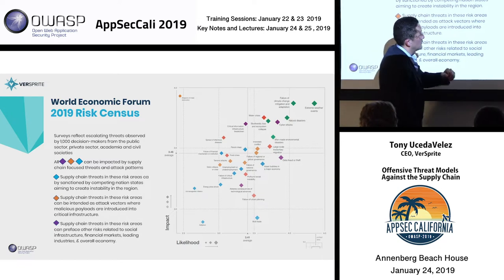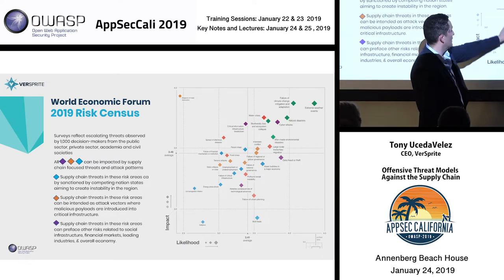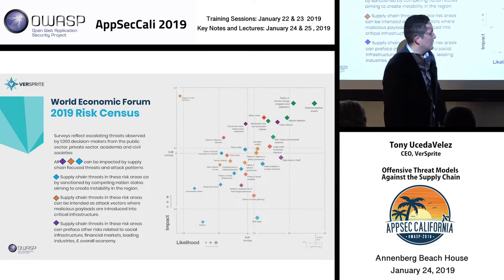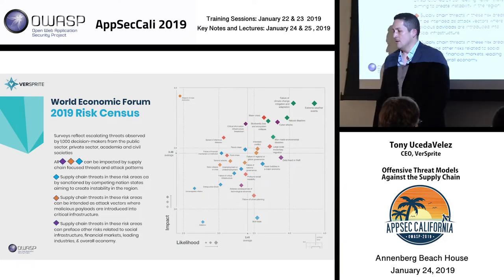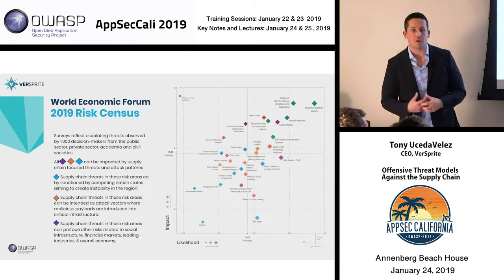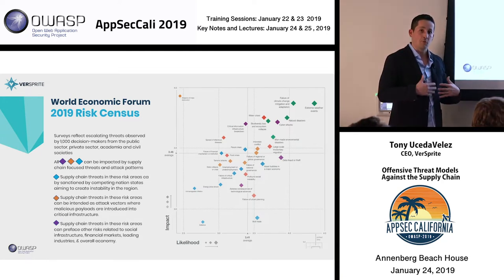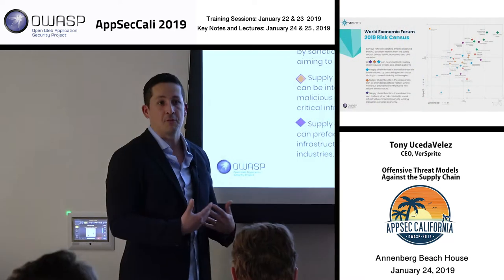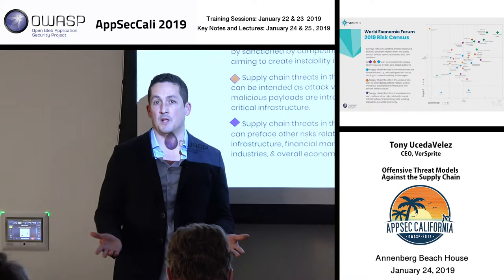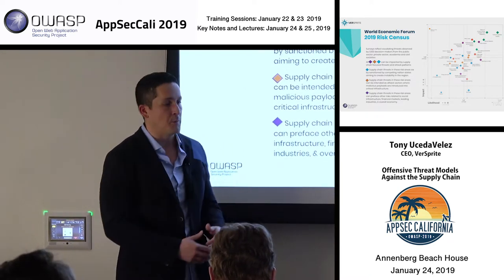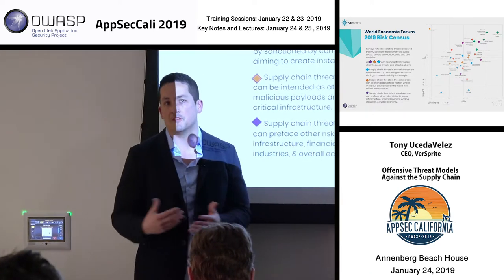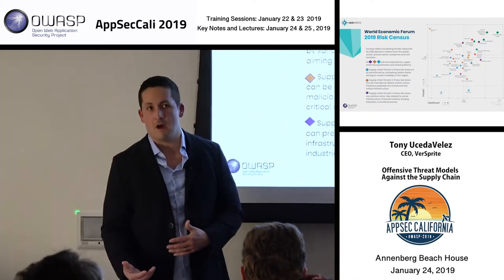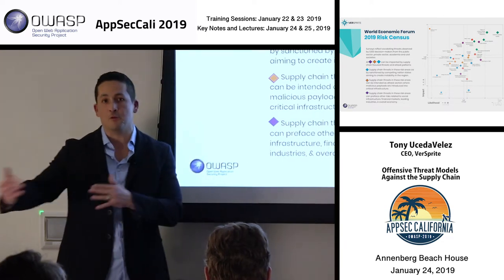Let's look at some of the blue areas: energy price shock, unmanageable deflation, illicit trade. This might seem non-topical to our lives as security professionals, but with supply chain, if you affect the delivery of services and products, you can actually affect pricing and supply. If you can interrupt and cause disruption through a supply chain hack, you can actually control some of the demand related to that specific product — maybe to do market manipulation.